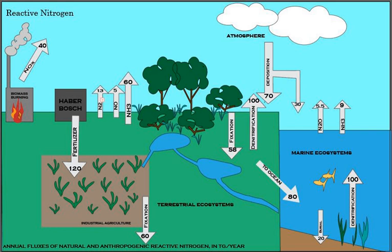Nitrogen is present in the environment in a wide variety of chemical forms including organic nitrogen, ammonium (NH4+), nitrite (NO2-), nitrate (NO3-), nitrous oxide (N2O), nitric oxide (NO), or inorganic nitrogen gas (N2). Organic nitrogen may be in the form of a living organism, humus, or in the intermediate products of organic matter decomposition.